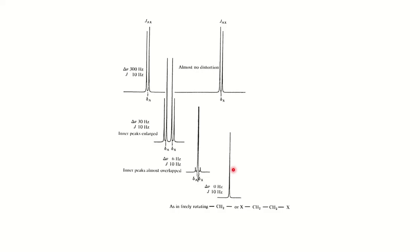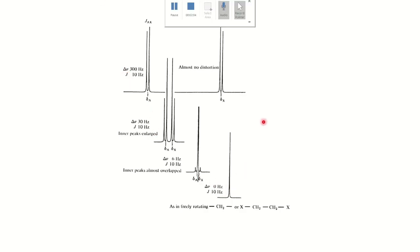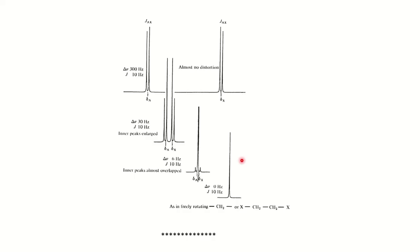When Δν decreases further to 6 Hz with J = 10 Hz, the ratio is even smaller and the outer peaks nearly disappear, giving an almost complete AB spectrum. Finally, when Δν = 0 Hz, all lines completely merge, giving a pure AB spectrum. This diagram demonstrates how decreasing Δν converts an AX spectrum into an AB spectrum.